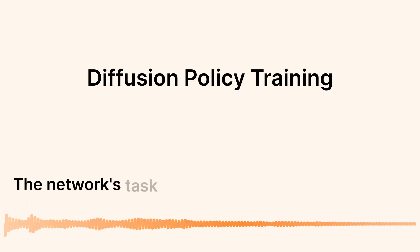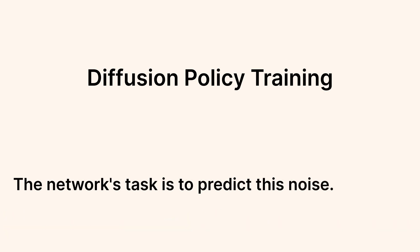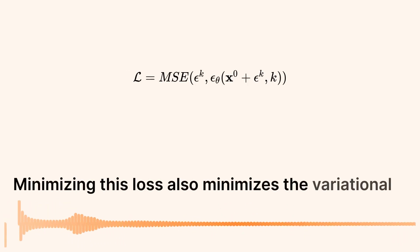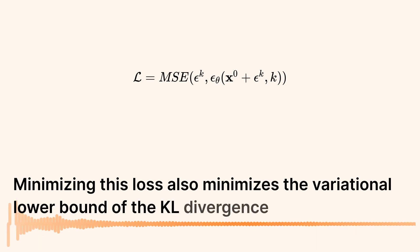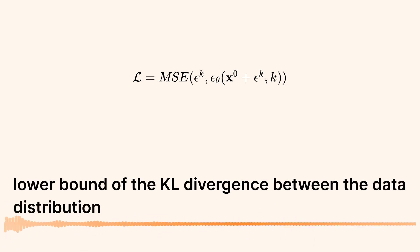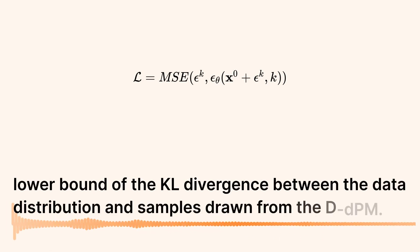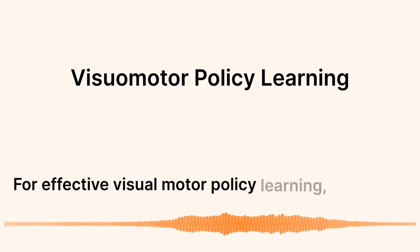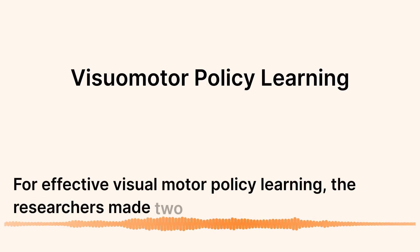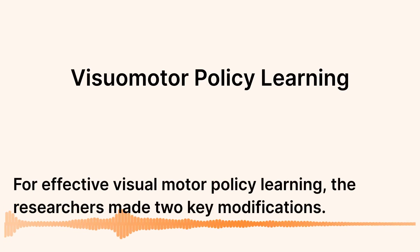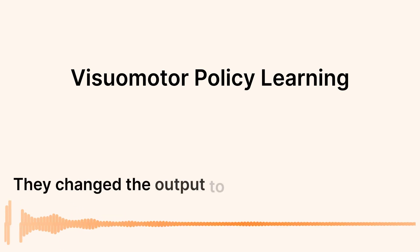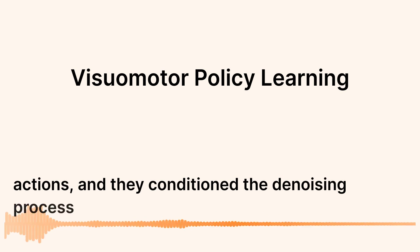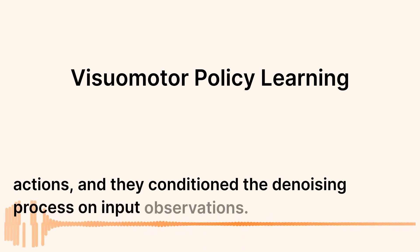The network's task is to predict this noise. Minimizing this loss also minimizes the variational lower bound of the KL divergence between the data distribution and samples drawn from the DDPM. For effective visuomotor policy learning, the researchers made two key modifications: they changed the output to represent robot actions, and they conditioned the denoising process on input observations.